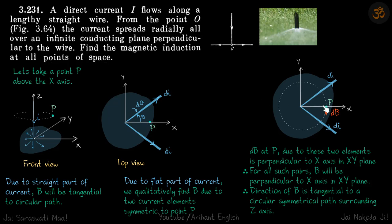For now, just understand that B is coming in minus Y direction. How it's coming in minus Y direction, we'll see in some time. But if you can visualize very strongly, I suggest you try. Maybe you will be able to figure out why the field because of these two symmetric current elements is towards minus Y direction. dB at P due to these two elements is perpendicular to x axis in XY plane like this.